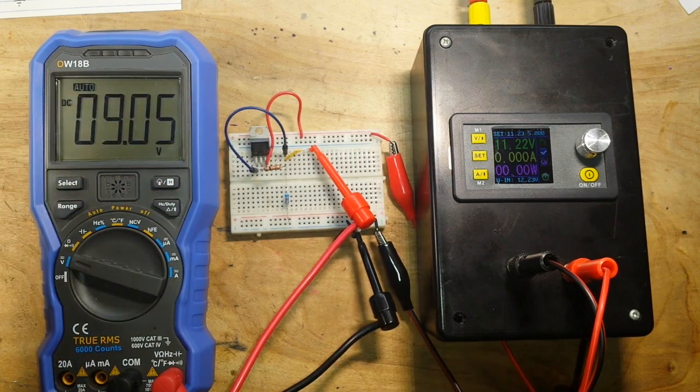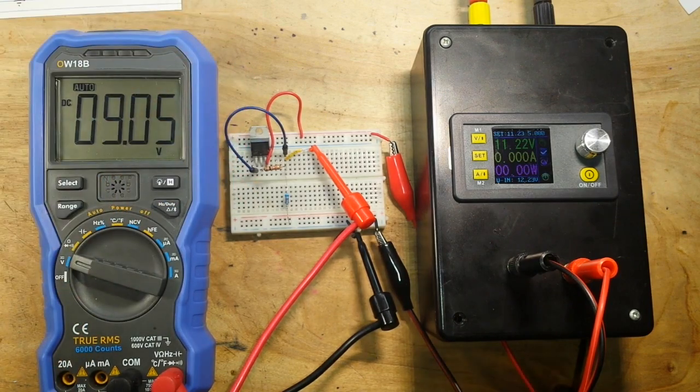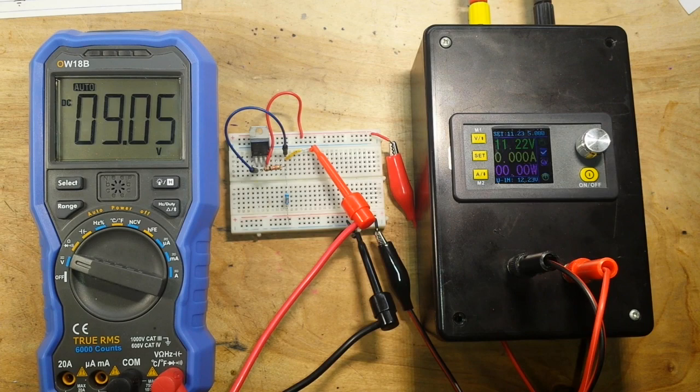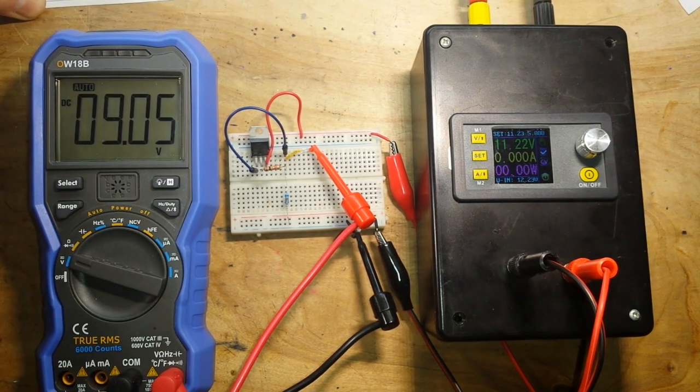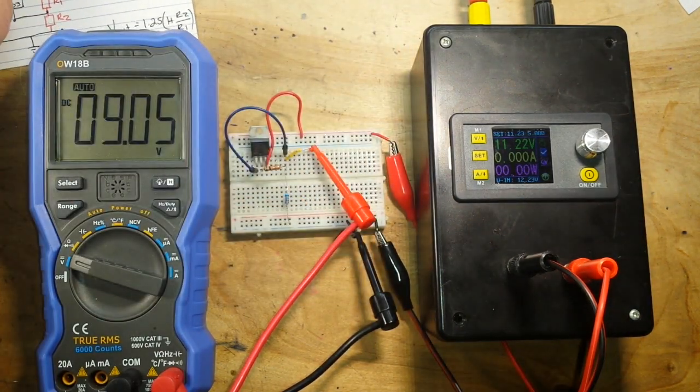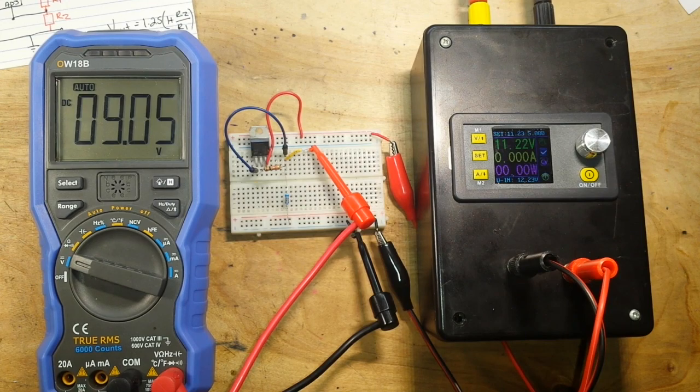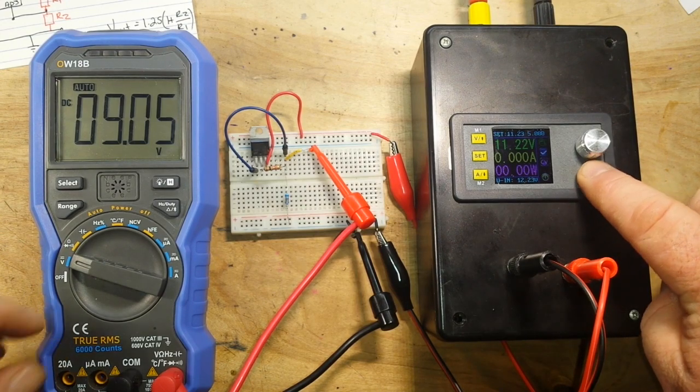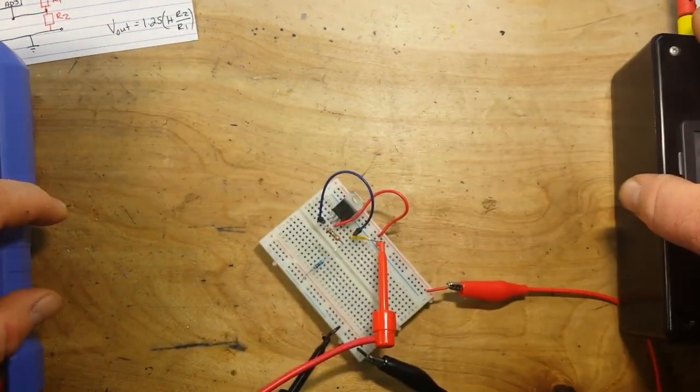So this is a really simple circuit. You can see you only need the three components, and you can set yourself up a really easy voltage regulator. You can use the formula I showed you, or you can use an online calculator, and I'll put a link to that down below too.